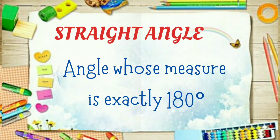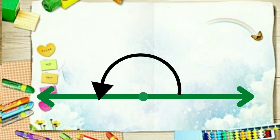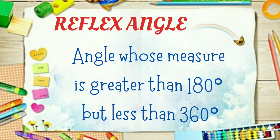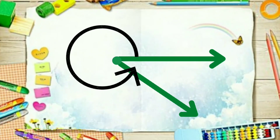Number four, we have the straight angle. A straight angle is an angle whose measure is exactly 180 degrees. Here is its illustration. Number five, here is its illustration.